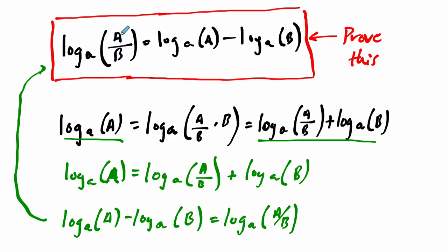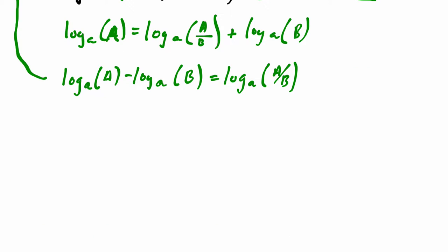But when we're dividing two things and finding a quotient, it equals the difference of log base a of A and log base a of B. So there's this nice symmetry there. And our third law, which we'll prove in this video.